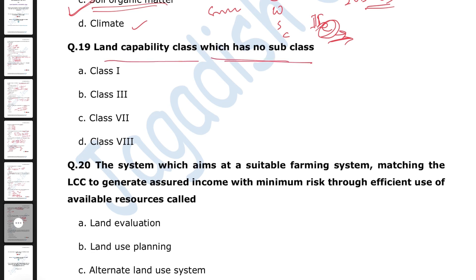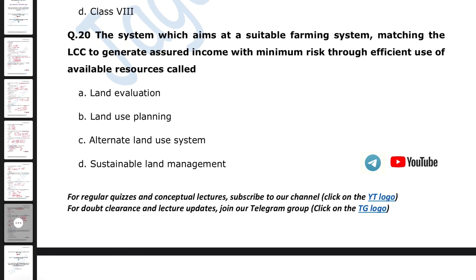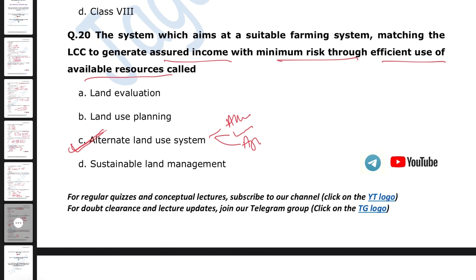Next question: which land capability class has no subclass? That is class one, because there are no to very few limitations there, so no subclass exists for class one. Finally, the system which aims at a suitable farming system matching the land capability class to generate assured income with minimum risk through efficient use of available resources is called the alternate land use system. This includes relay cropping, lay farming, agroforestry types like agri-silviculture and silvipastoral systems.